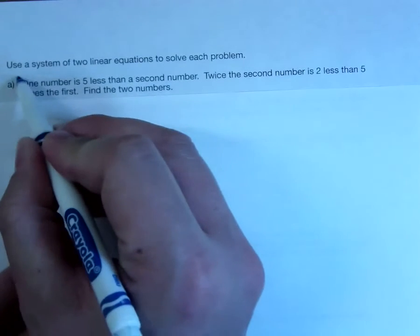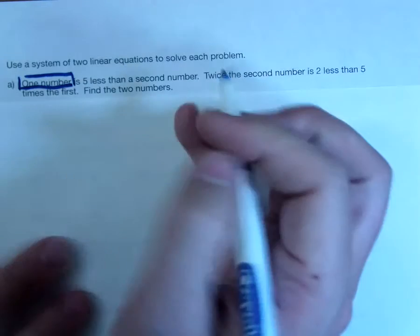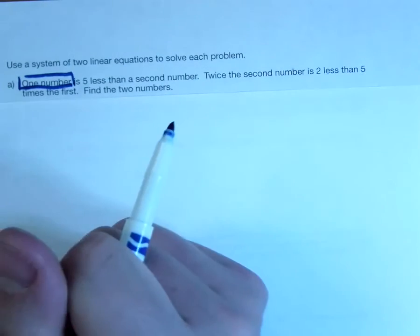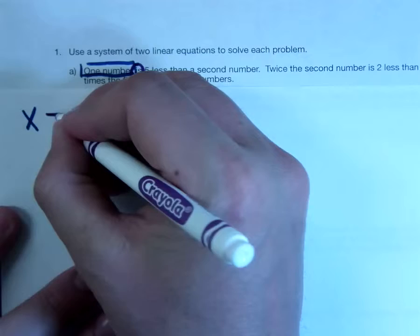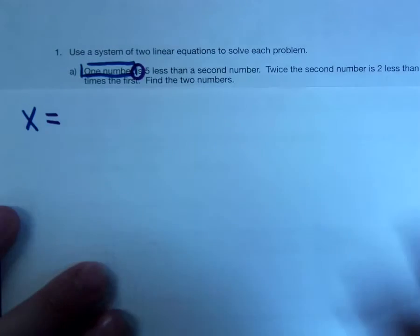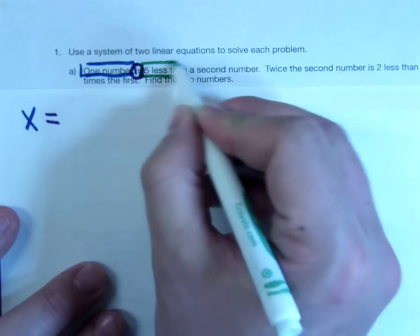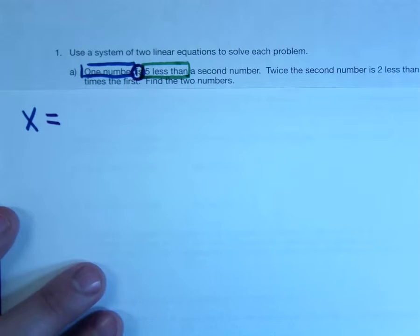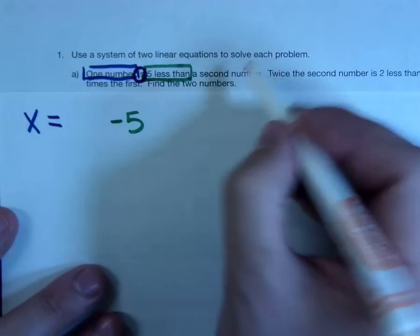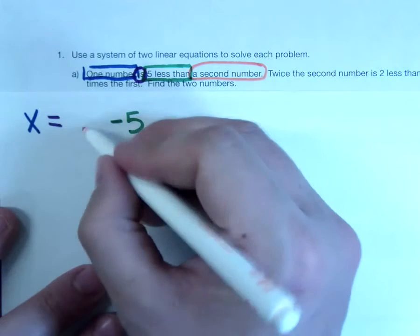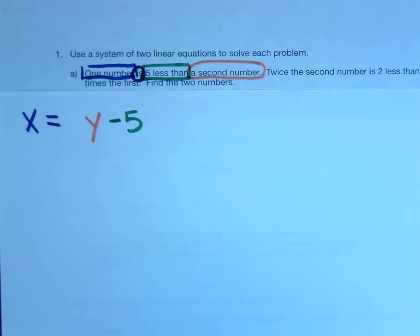Let's start with this one. It says one number is, so one number is going to be a variable, we'll call that X. Is means equals. Now here's the part that's a little tricky. Five less than does not mean five minus. What does five less than mean? It's minus five. And a second number, that's our second variable. So equation number one is X equals Y minus five.